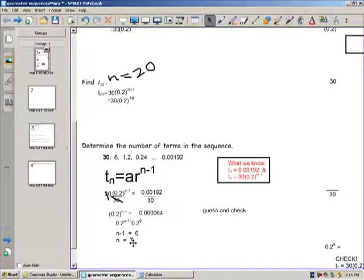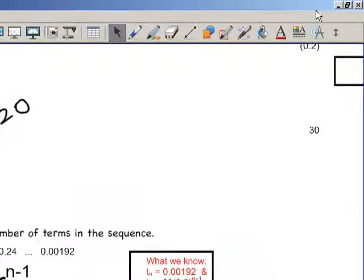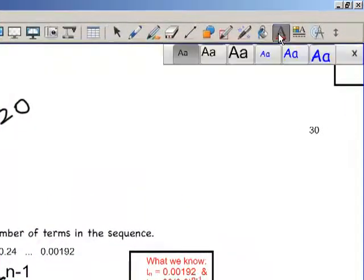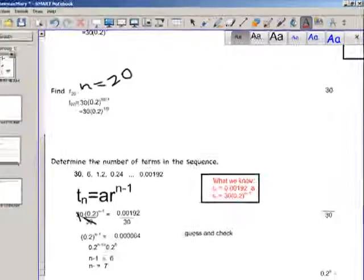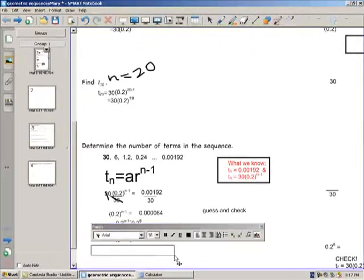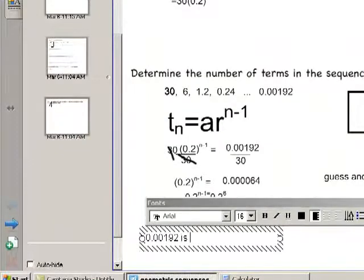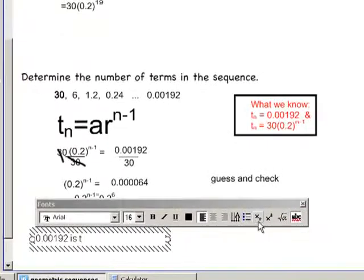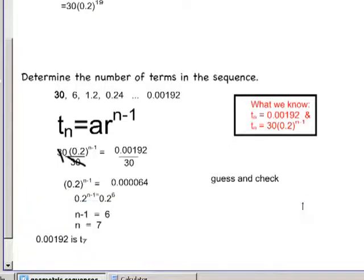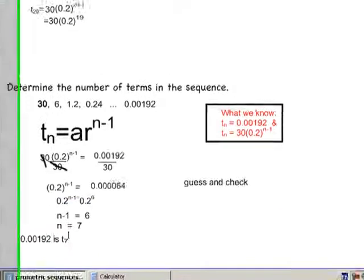So we have now established that 0.00192 is the 7th term, is T7. And that is our final answer.